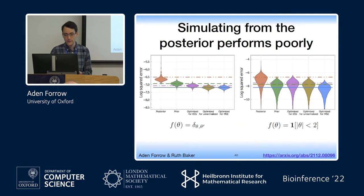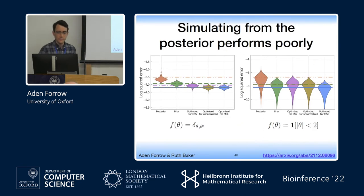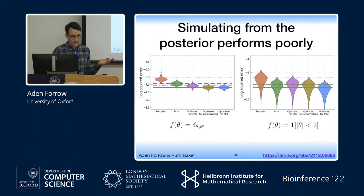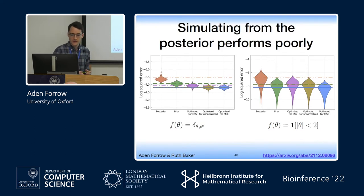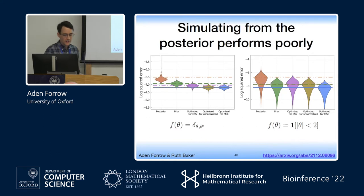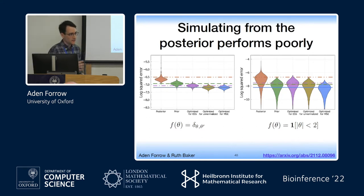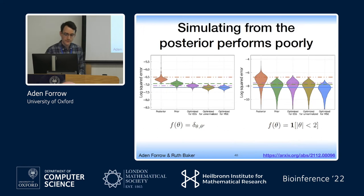For estimating where your 95% credible interval is, it really matters to understand what is going on in that 5% where your model is less likely. Simulating from the posterior systematically performs poorly in the examples I've tried — often worse than the prior. Optimizing for effective sample size is inconsistent: depending on your function, it might perform well or poorly.